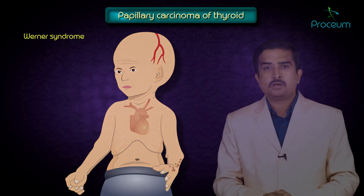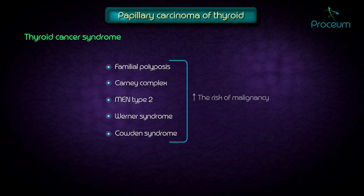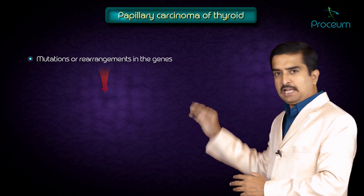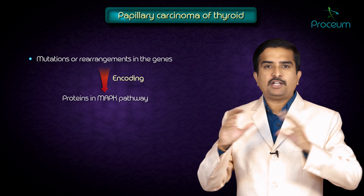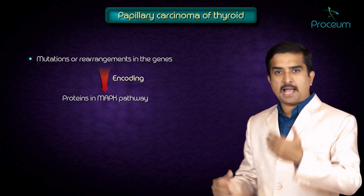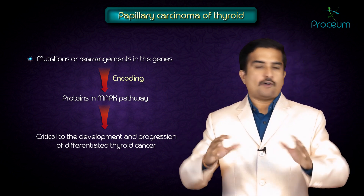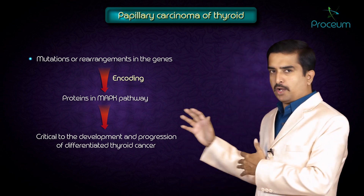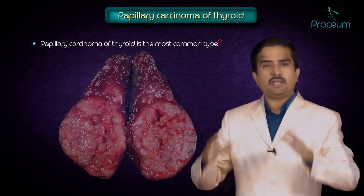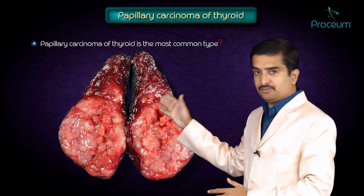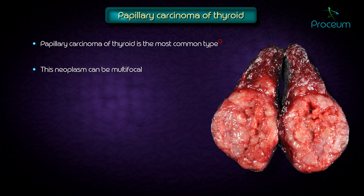Wermer syndrome and Cowden syndrome also increase the risk. Mutations or rearrangements in genes encoding proteins in the mitogen-activated protein kinase (MAPK) pathway are critical to the development and progression of differentiated thyroid cancer. Papillary carcinoma is the most common type of thyroid cancer. This neoplasm can be multifocal due to its propensity to invade lymphatics within the thyroid.